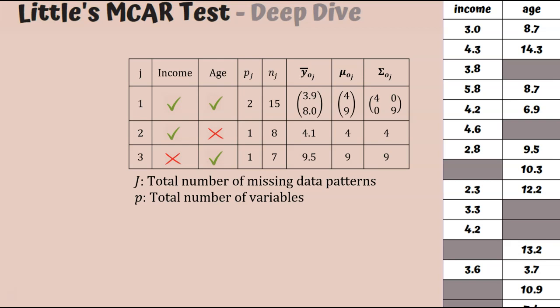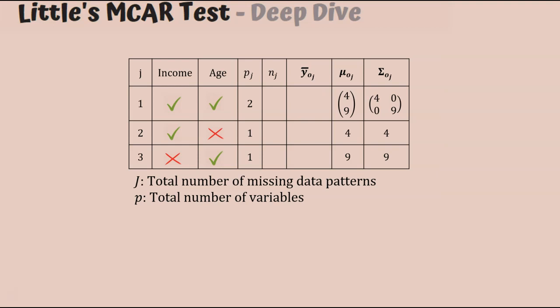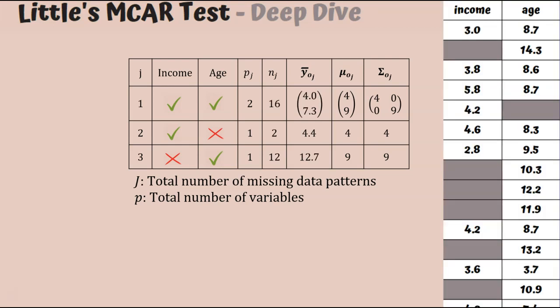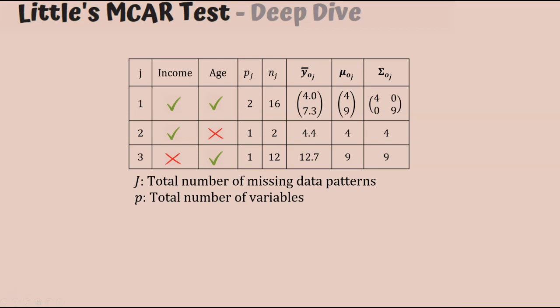Now, if the data are missing completely at random, these sample means should be pretty close to the true mean. And actually, in this example, I did delete some of the values completely in a random way. So we do observe that the sample means look pretty similar to the true mean. In contrast, if we remember the example where I made the incomes of the older cats missing, you can see that the ages in the third pattern are quite a lot bigger than the true value. So we want some way of comparing these sample means to the true mean, and knowing when they're similar enough to assume that the data are missing completely at random, or when they are too different to assume this. And that's exactly what this test statistic does.